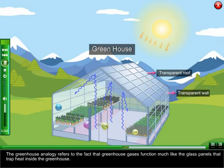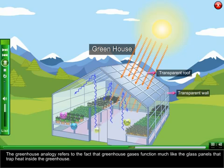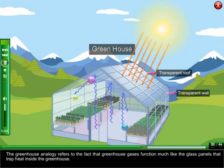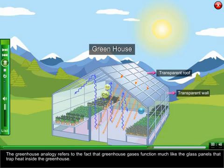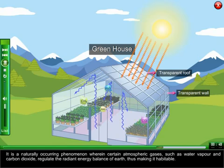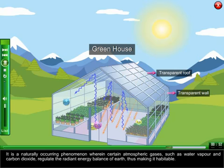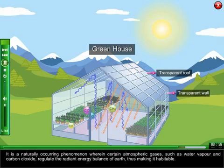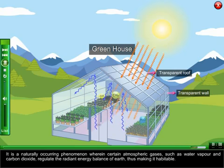The greenhouse analogy refers to the fact that greenhouse gases function much like the glass panels that trap heat inside the greenhouse. It is a naturally occurring phenomenon wherein certain atmospheric gases such as water vapour and carbon dioxide regulate the radiant energy balance of earth, thus making it habitable.